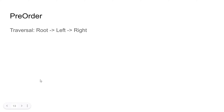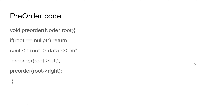Pre-order traversal: root, left, right. Here's the pre-order code. If root equals null pointer, return. Output root dot data, then call pre-order on root dot left, then pre-order on root dot right.